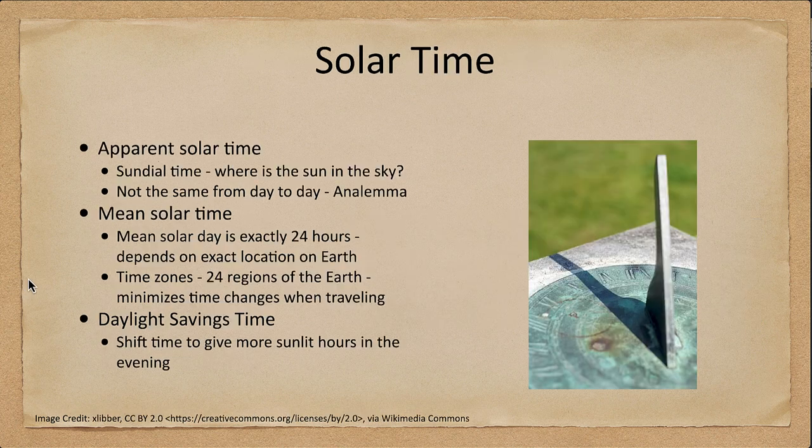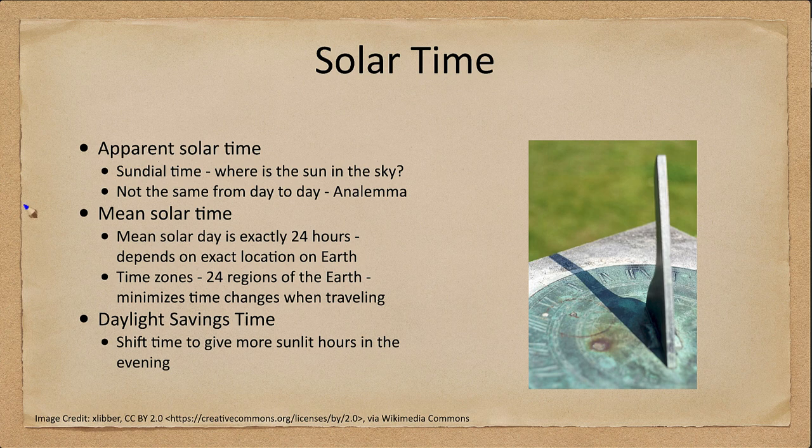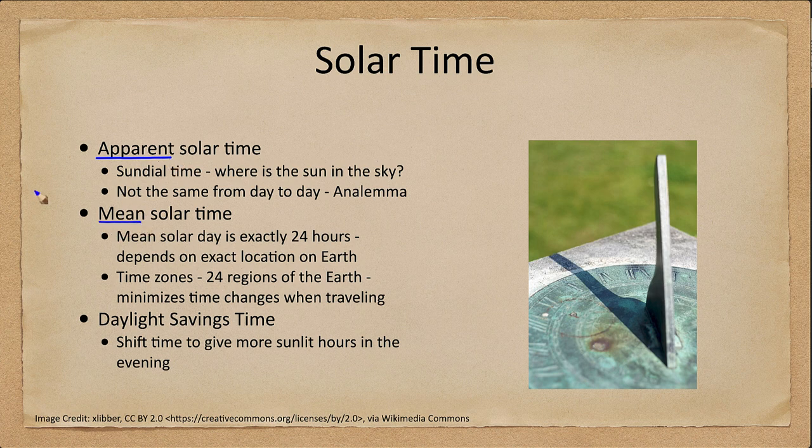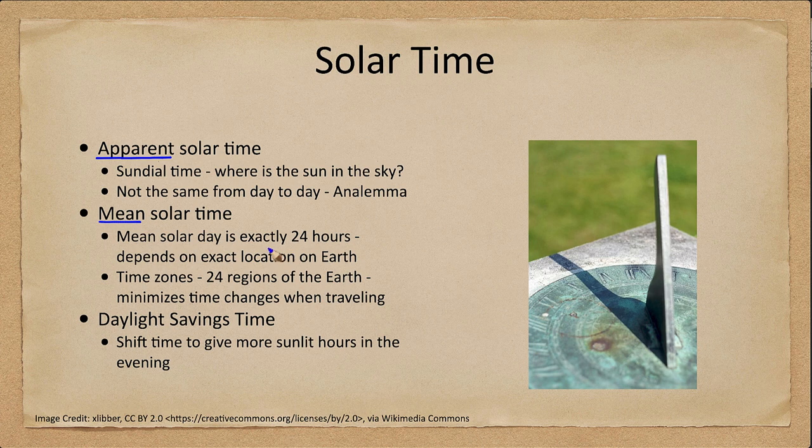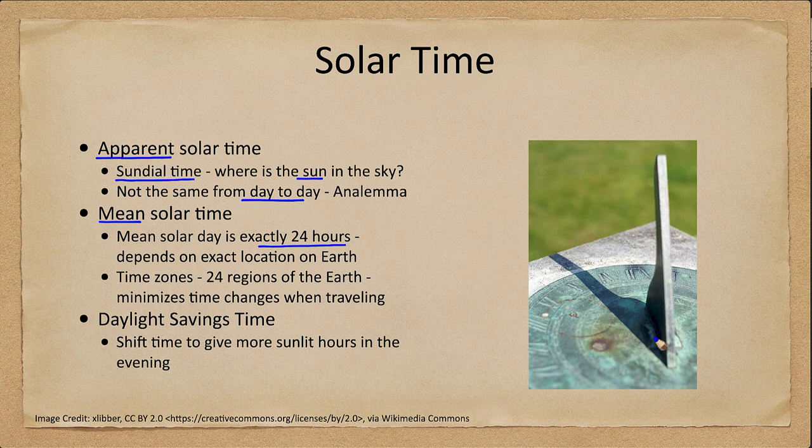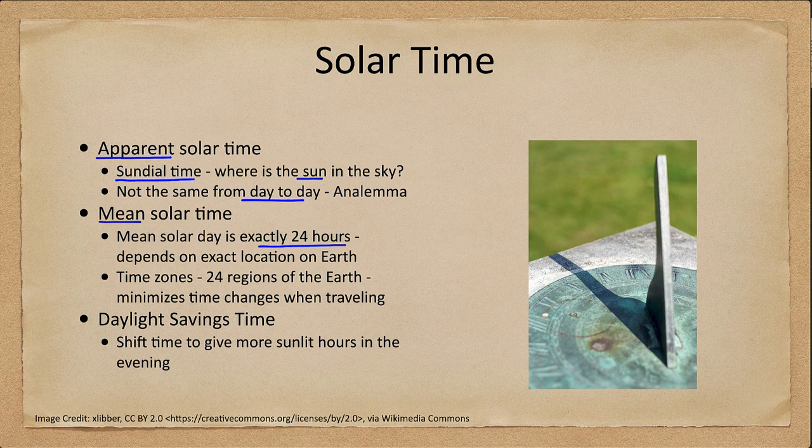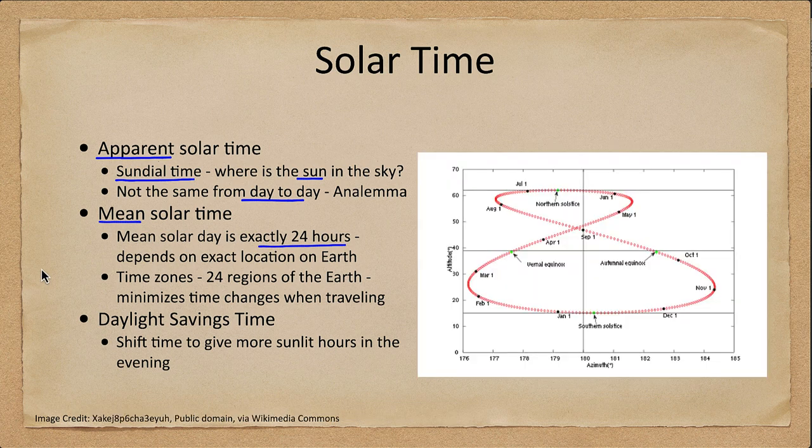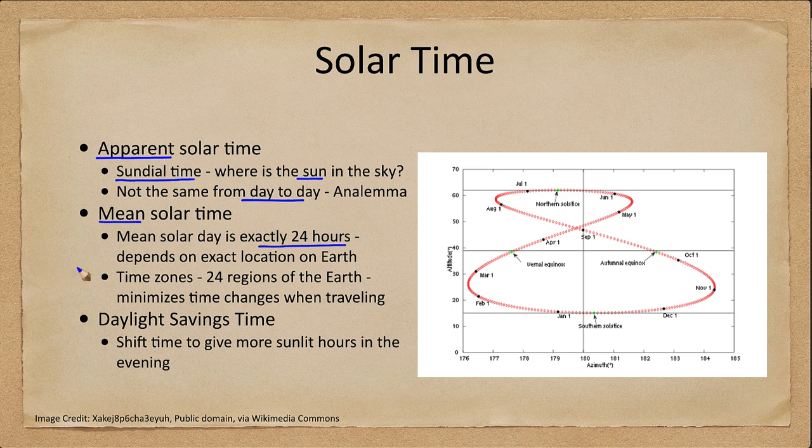So what do we mean by solar time? Well there are actually more types of solar time. We can have apparent solar time and mean solar time. Mean solar time is what we use, that is the mean solar day being exactly 24 hours. The sundial time is what the Sun would read and where the Sun is in the sky. This is not the same from day to day. So a sundial used here can tell you the rough time but it won't be exact because the Sun isn't always in the same position. That position changes.